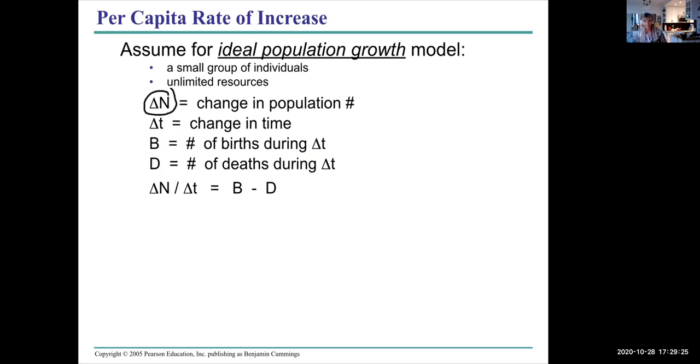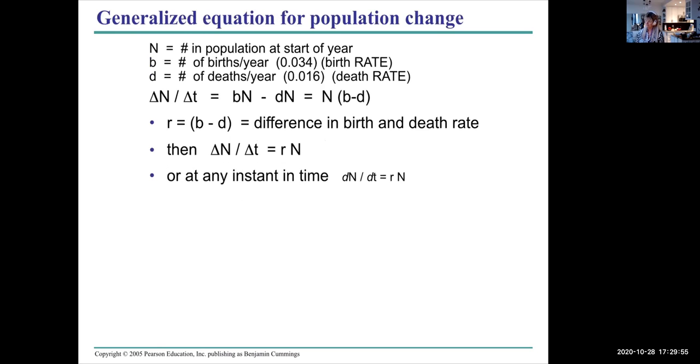Delta T is a change in time. B stands for the number of births during that time, and D stands for the number of deaths during that time. So the change in population size over a certain time period, the change in time, is equal to the births minus the deaths. That's quite logical.